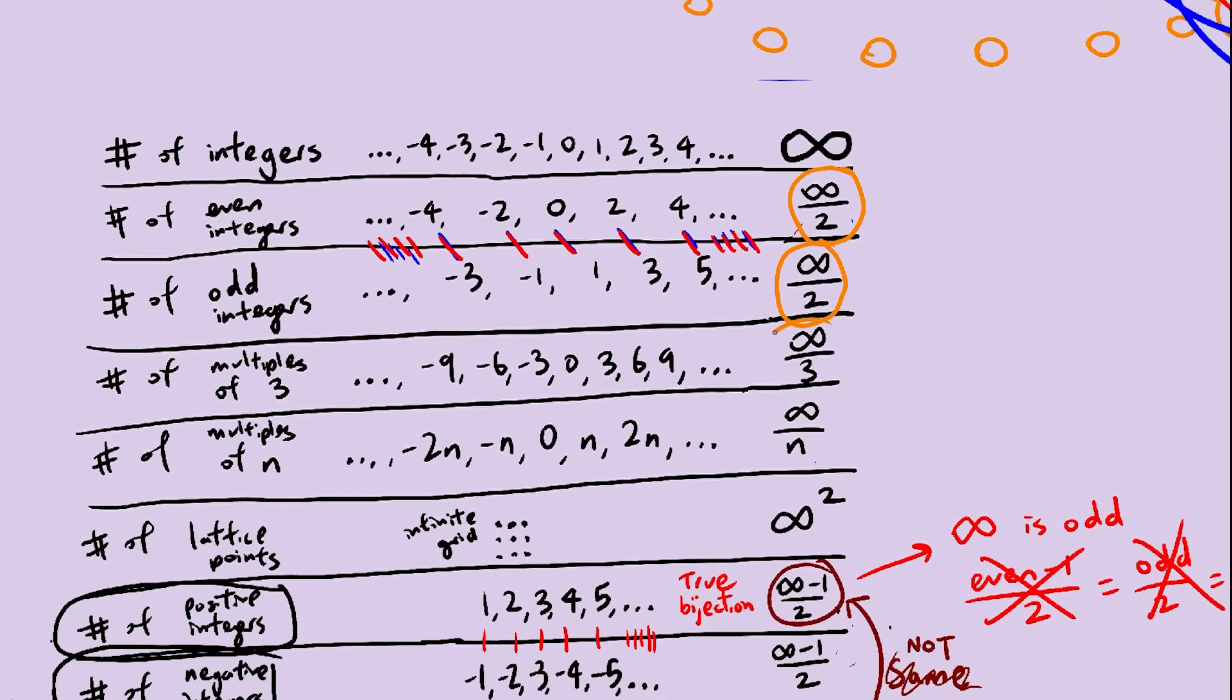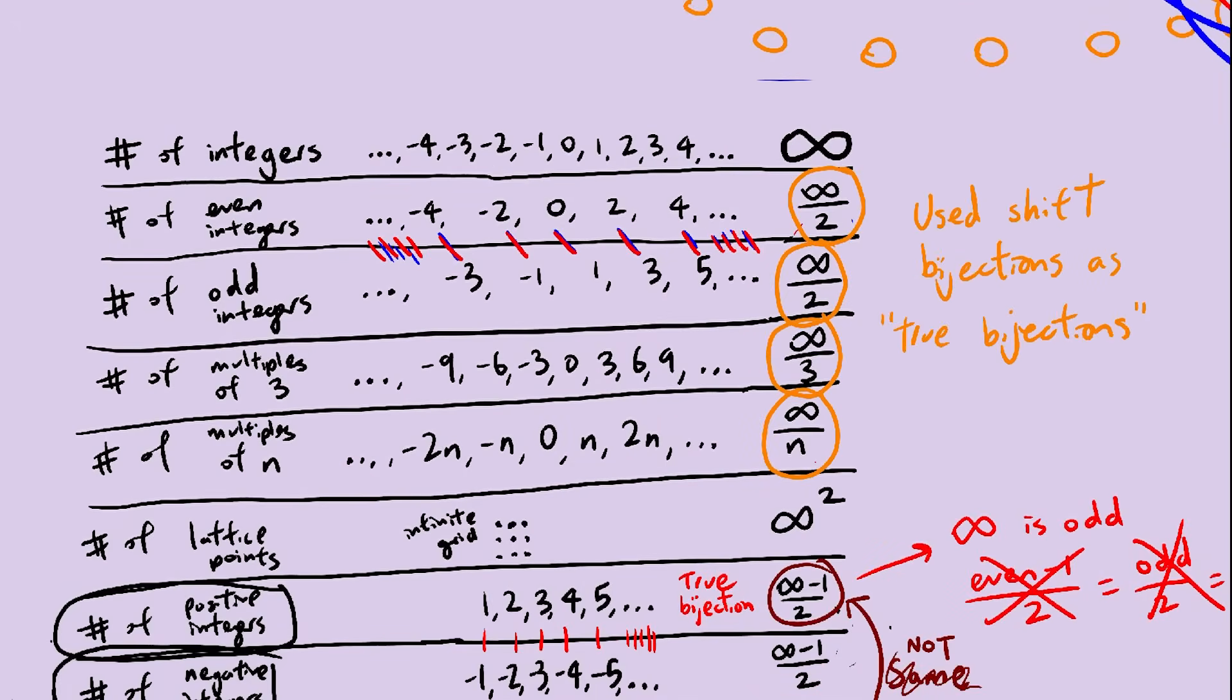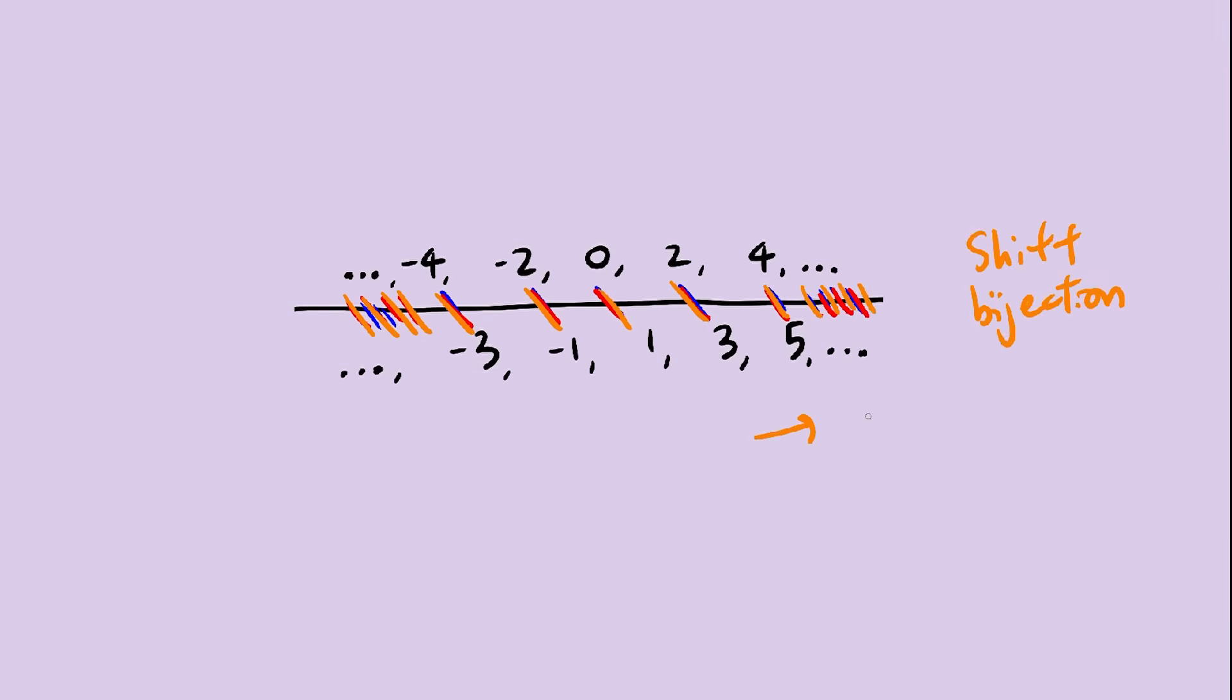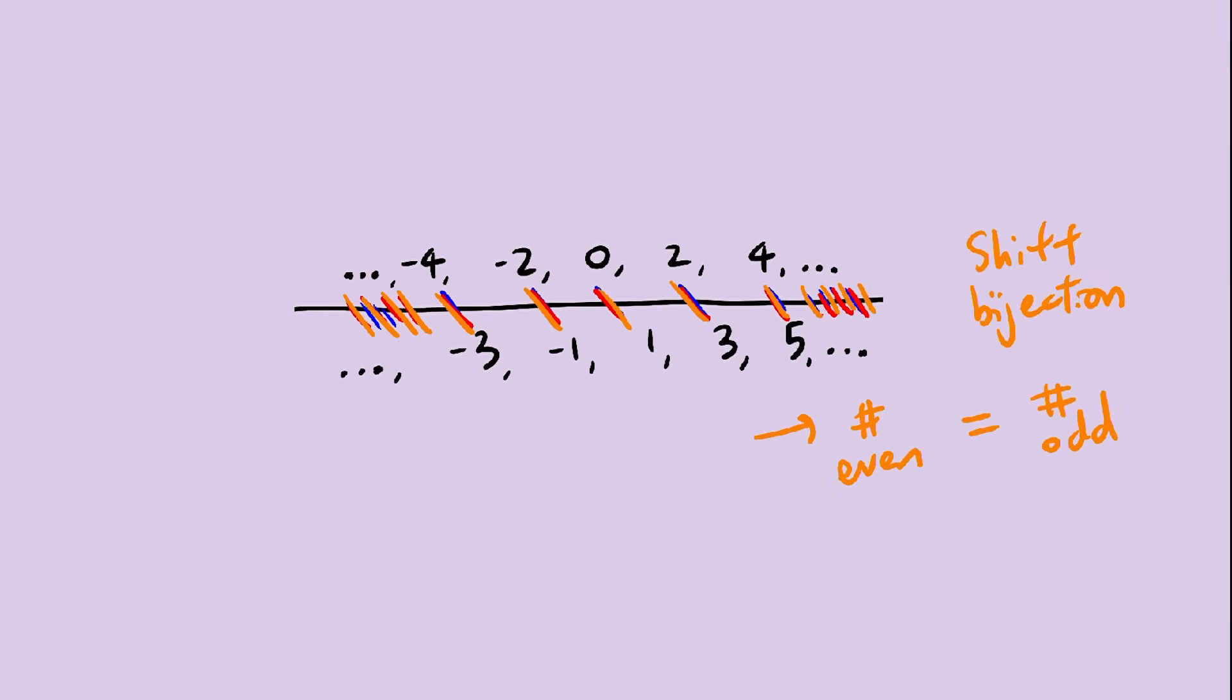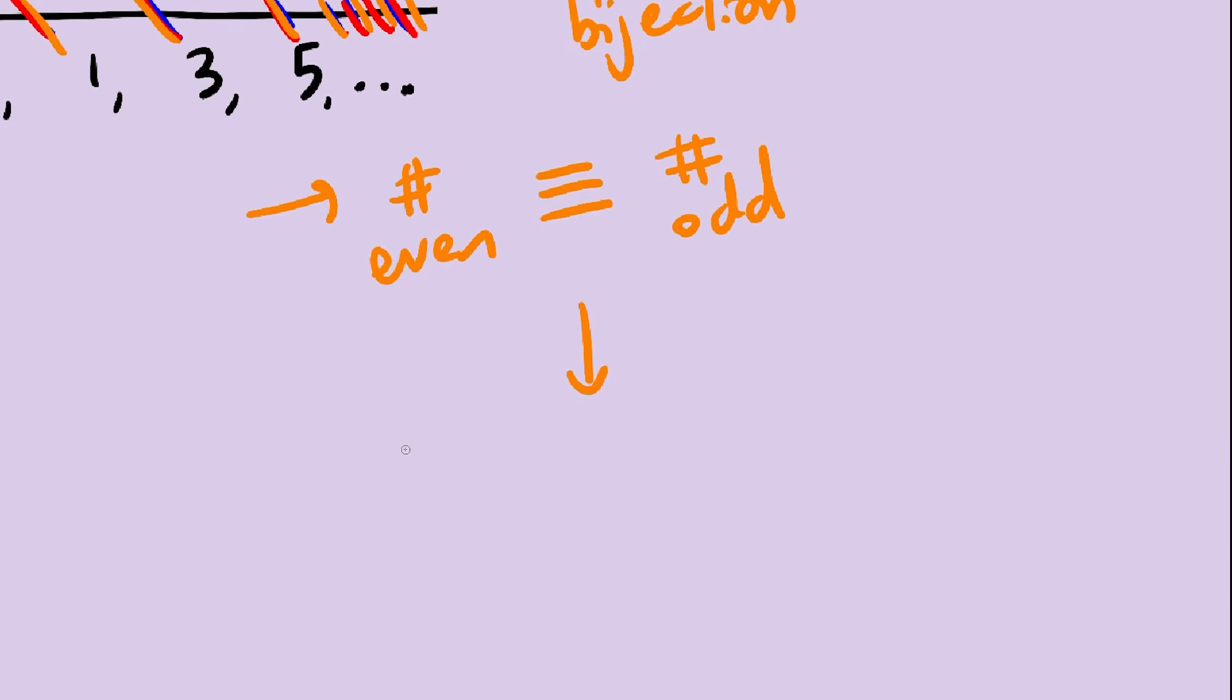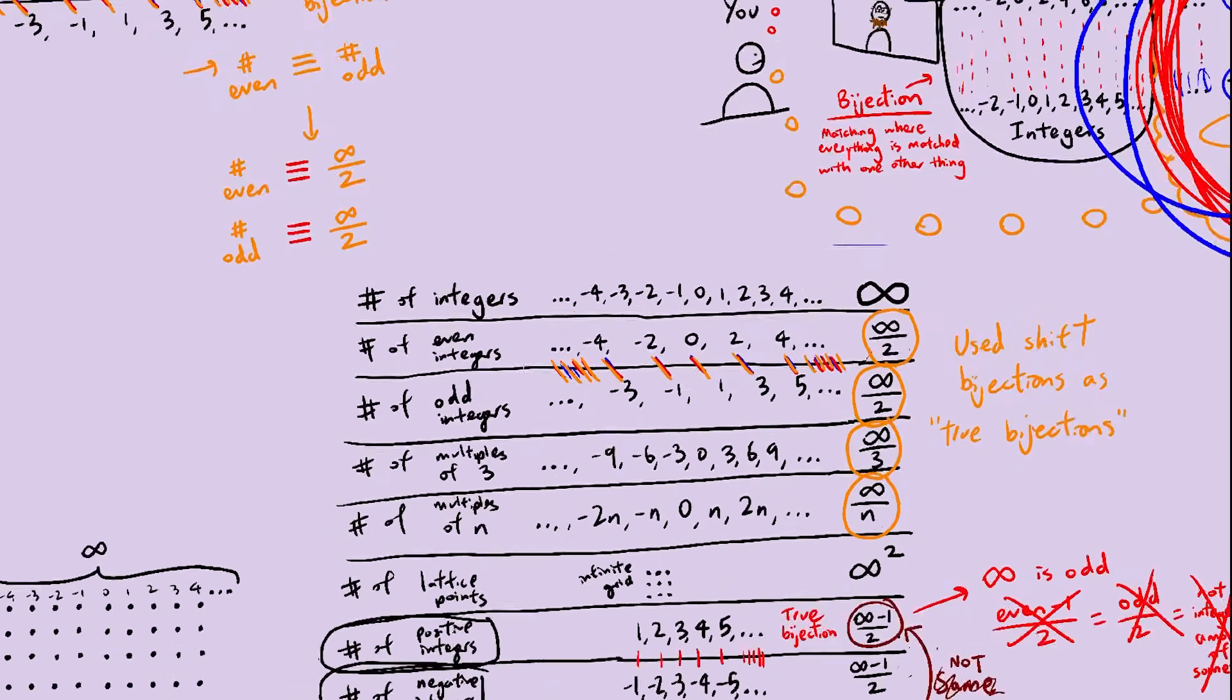Let's check how bad the damage is over with the even and odd numbers, since they relied heavily on shift bijections. Okay, so before, there were the same amount of even and odd numbers. But now, we can only say that the sizes, cardinalities, are partially equal. So, the amount of even numbers is not truly equal to infinity over 2, it's only partially equal. And the same thing goes for odd numbers, multiples of integers, etc.